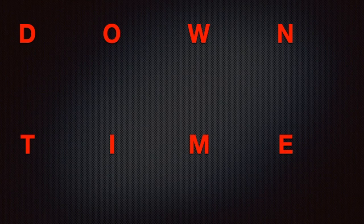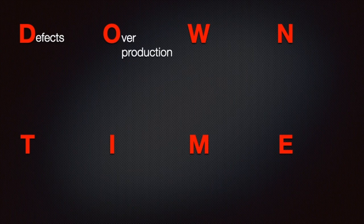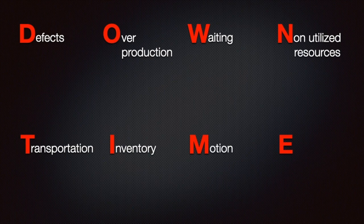When defining all forms of waste, I like to use the acronym downtime. That helps me remember what the eight different wastes are. So let's start. Defects, overproduction, waiting, non-utilized resources or talent, transportation, inventory, motion, and extra processing. These represent all the forms of waste.